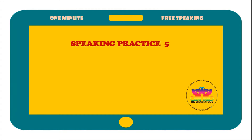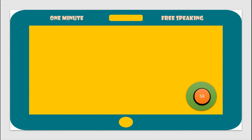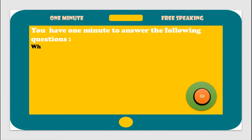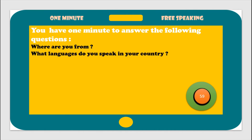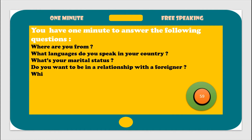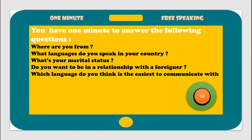Hello and welcome to Speaking Practice Five. Today's topic is Languages and Marital Status. You have one minute to answer the following questions: Where are you from? What language do you speak in your country? What's your marital status? Do you want to be in a relationship with a foreigner? Which language do you think is the easiest to communicate with? Let's go.